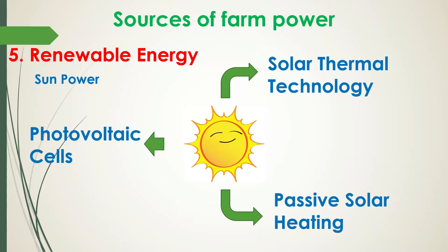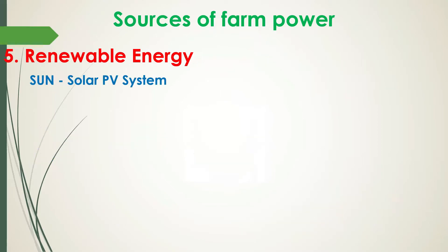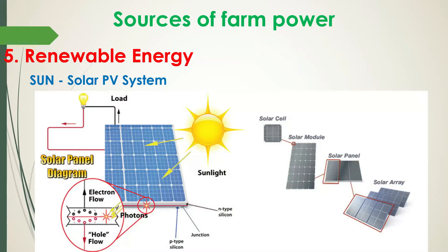Photovoltaic cells use a material called a semiconductor that converts light into electricity. One photovoltaic cell can only convert a small amount of sunlight into electricity, so in order to generate higher electricity, we can group the photovoltaic cells to form a solar panel. With the solar panel you generate more electricity than a single photovoltaic cell.